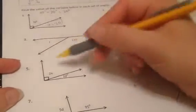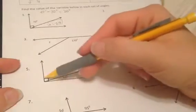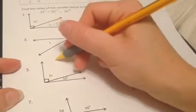So let's take a look at number 5. Because it's shaped like this L, a right angle, we know that it's going to have to add up to 90 degrees.